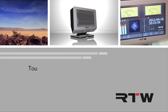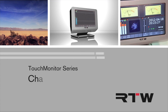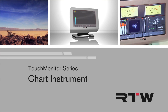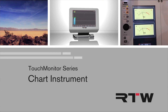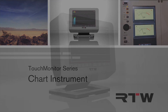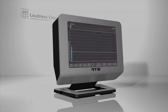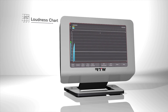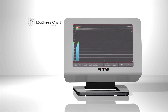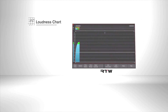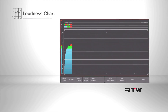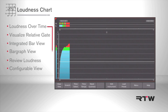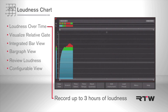Welcome to the world of the RTW Touch Monitor Series. This clip highlights the Chart Instruments feature. Loudness Chart is a software option for the RTW Touch Monitor Series. A Loudness History graph provides loudness over a time display for up to 3 hours, with a timeline and status bar.